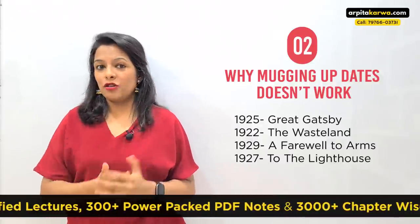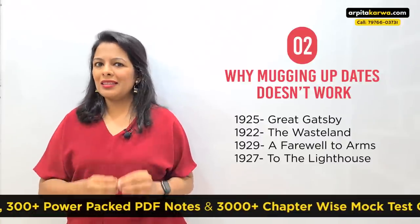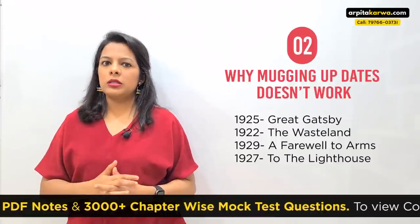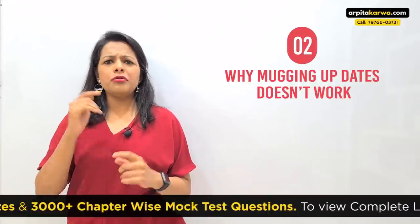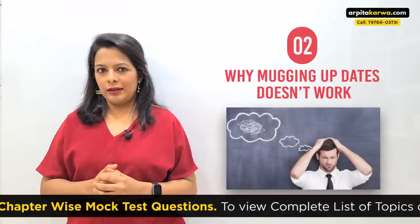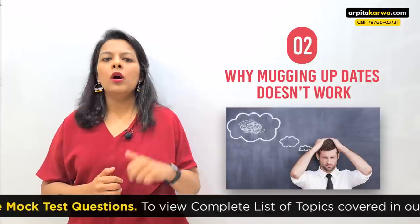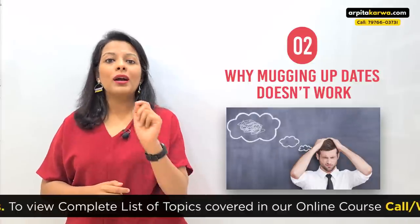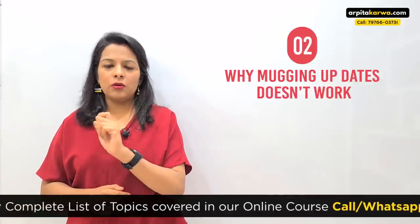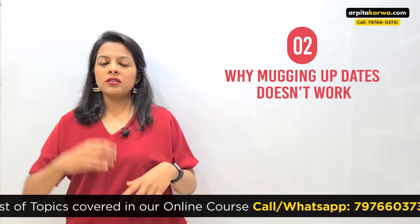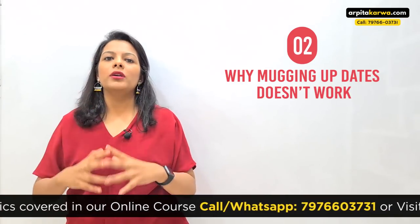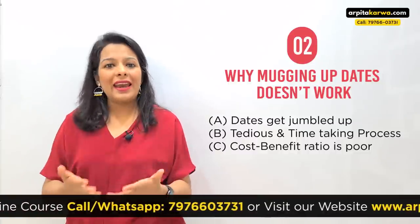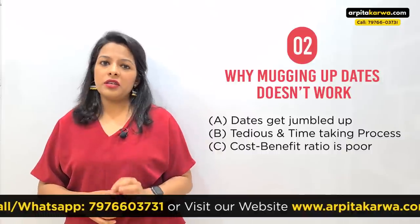What happens is that you might remember the dates for a day, but tomorrow when you look at the works again, you will get confused and all the publication dates are going to jumble up in your head. For example, there are four prominent works published in the 1920s displayed on screen with their publication dates. Look at this table for a while, then tomorrow try to recall these four works and their publication dates — mostly the dates will get swapped and you'll end up making mistakes.